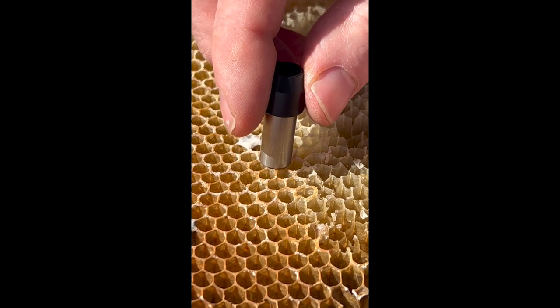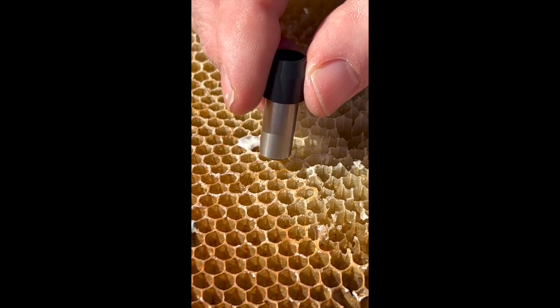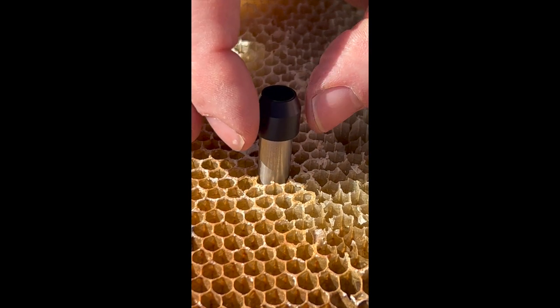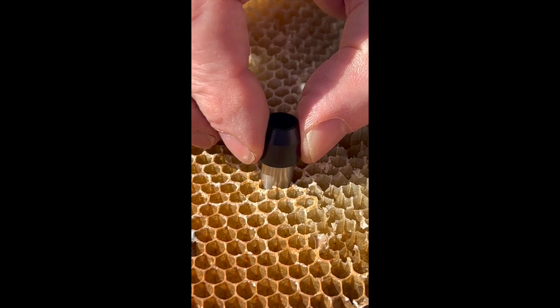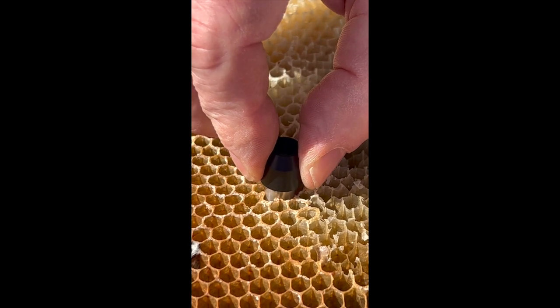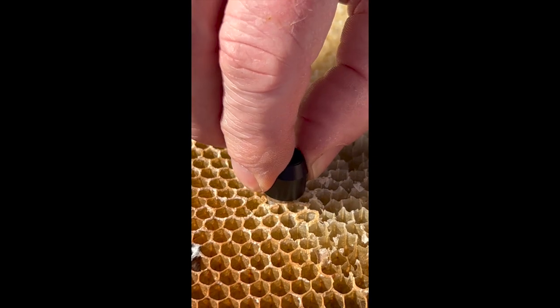You cover the complete cell which contains the larvae. The tube is bigger than the cell. You twist and cut, cutting through the mid-rib of the frame.